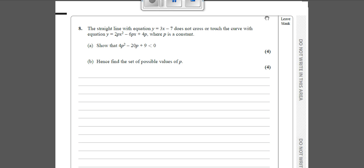Okay, so this question here takes a little bit more understanding than the previous questions and it's saying that these two lines don't actually intersect, which means that we can't solve 2px² - 6px + 4p equals 3x - 7.